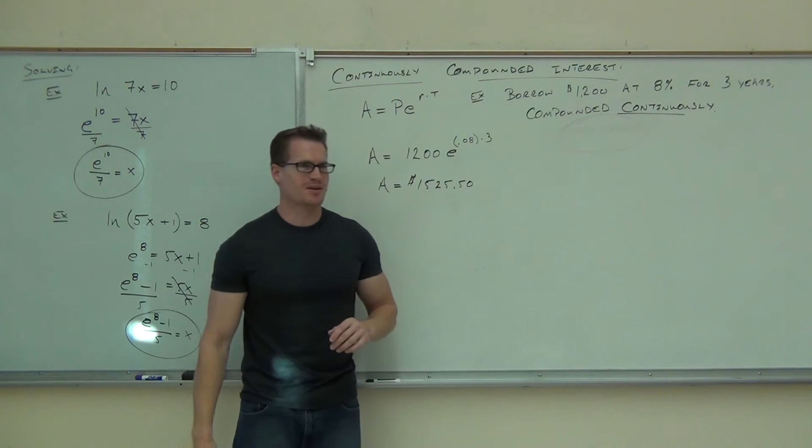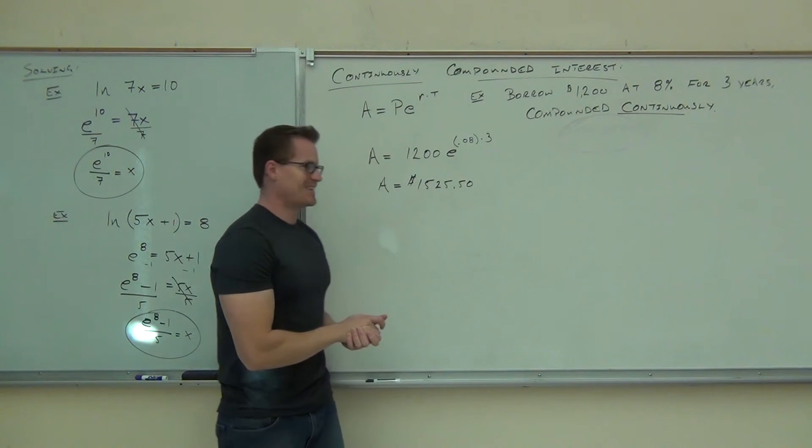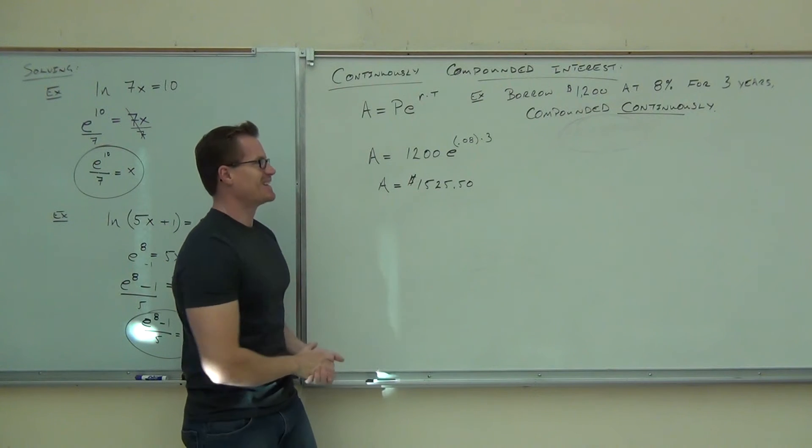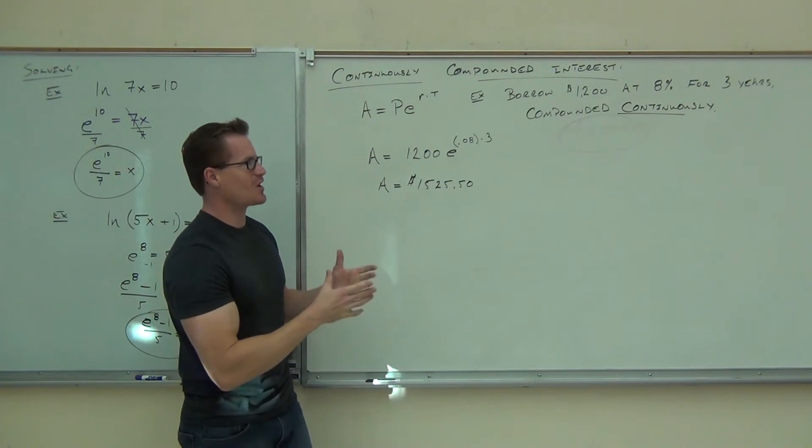I know, I'd probably give you 20% in three years. I'm a jerk and I want money. Anyway, that's how you figure out your continuously compound interest.